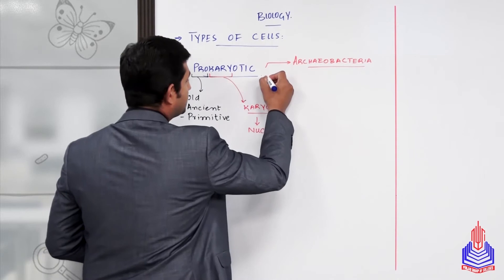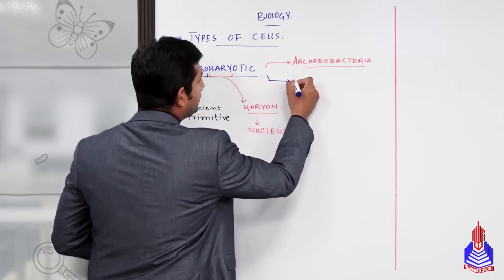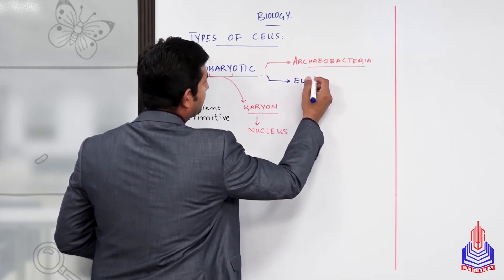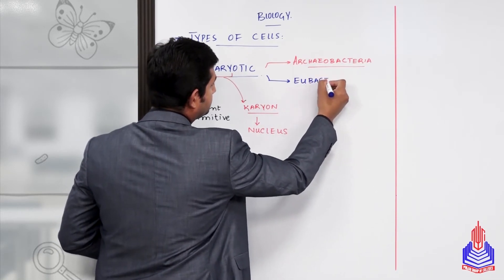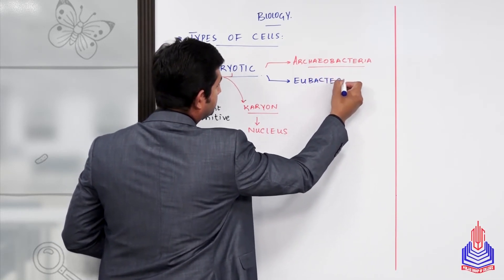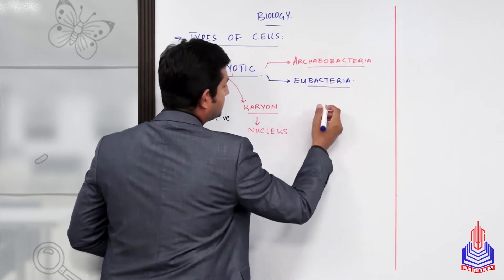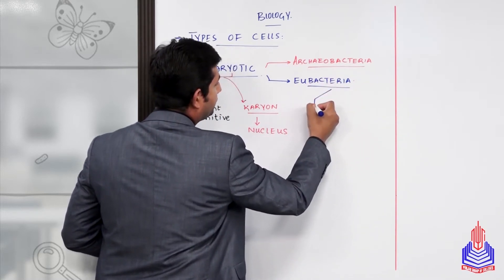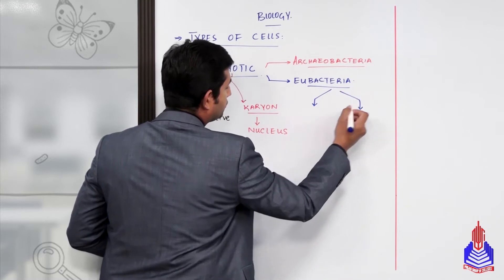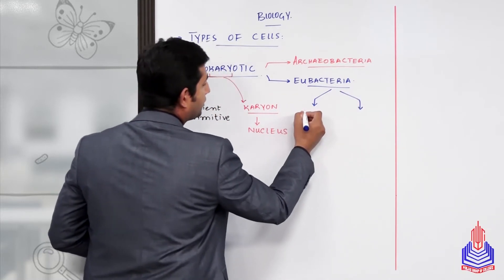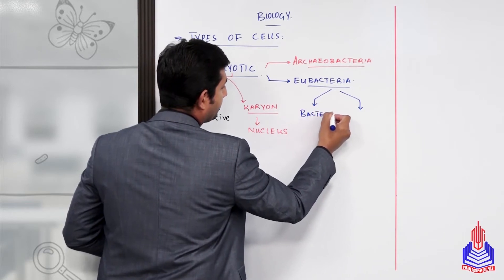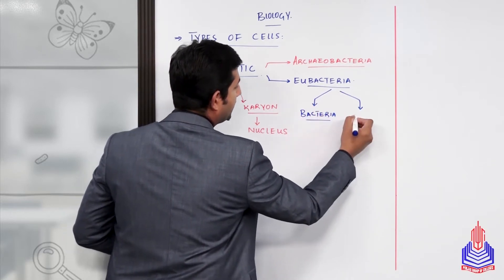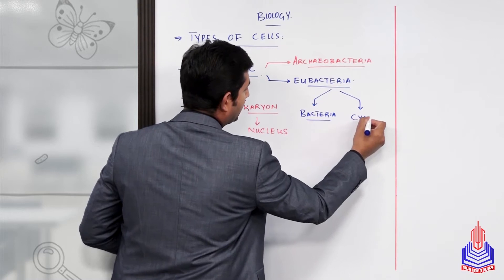The second type is eubacteria, or true bacteria. Eubacteria are further differentiated into two groups: one we generally call just bacteria, and the other are cyanobacteria.